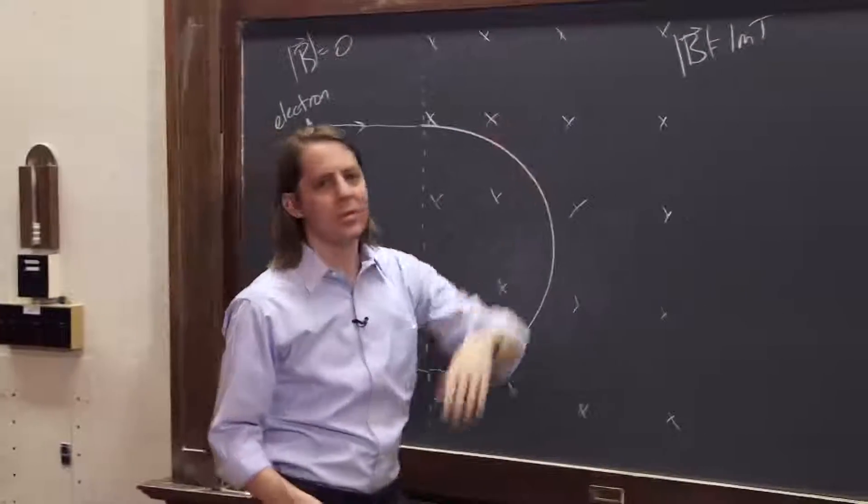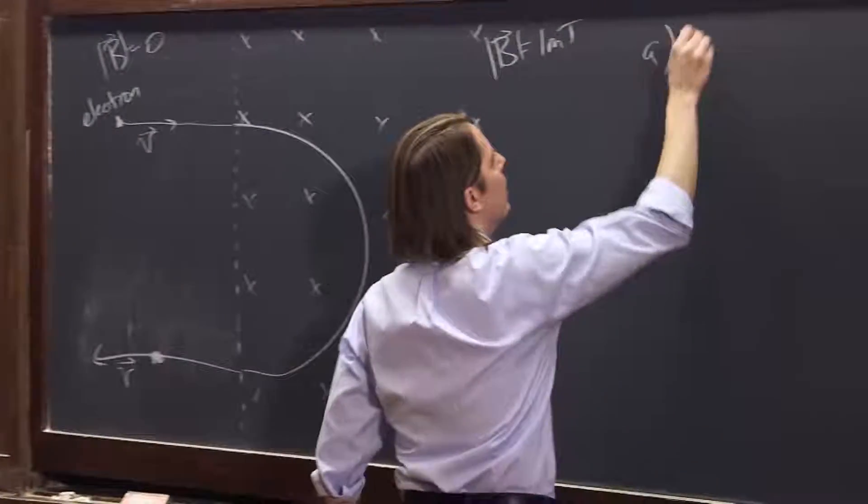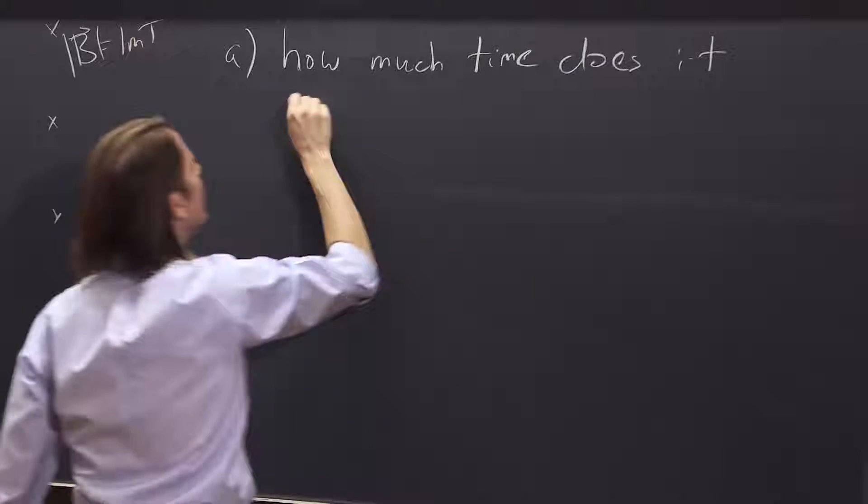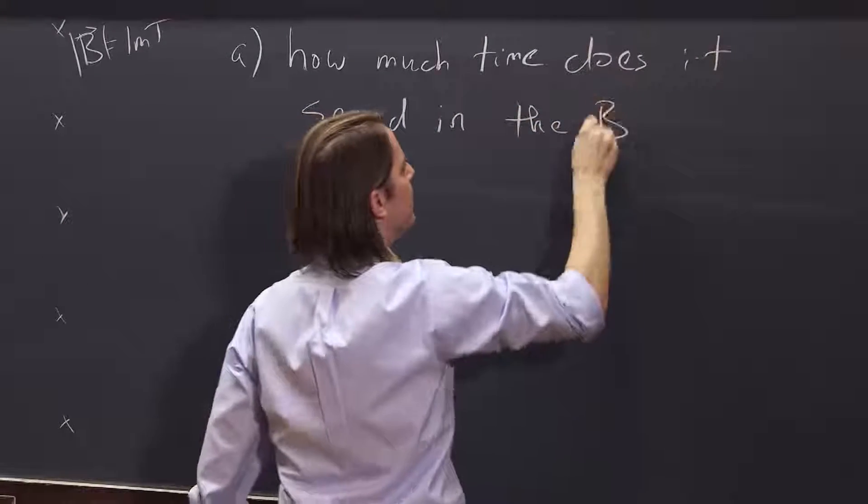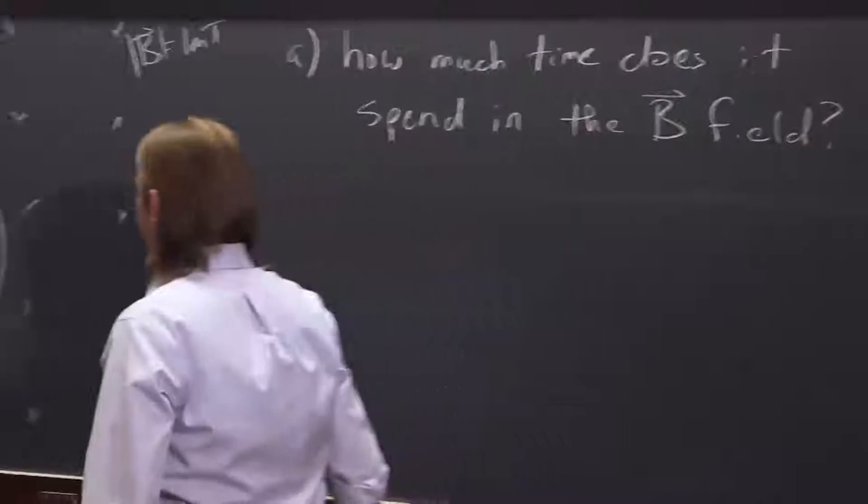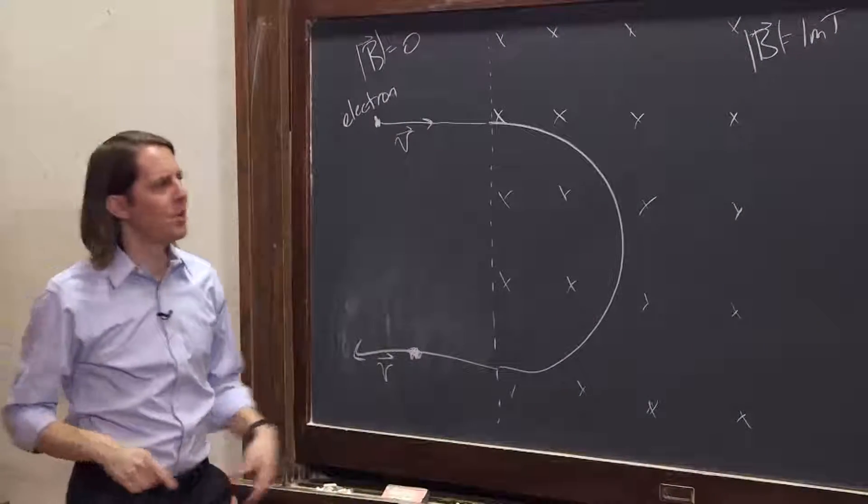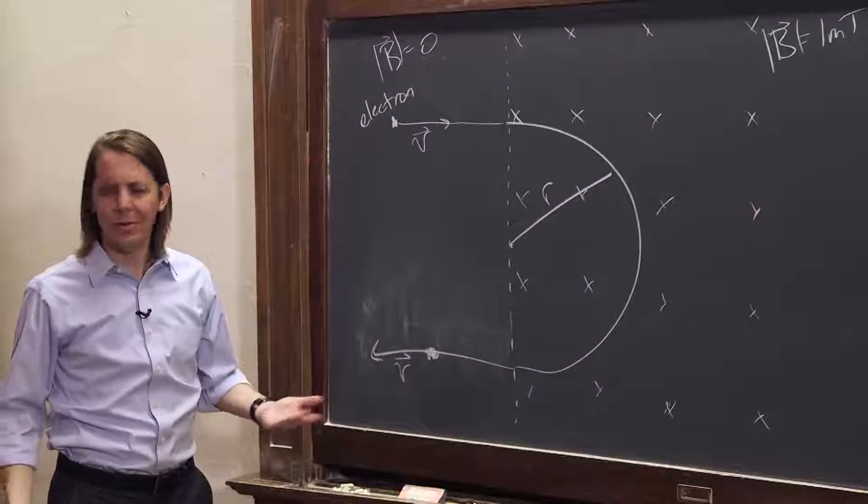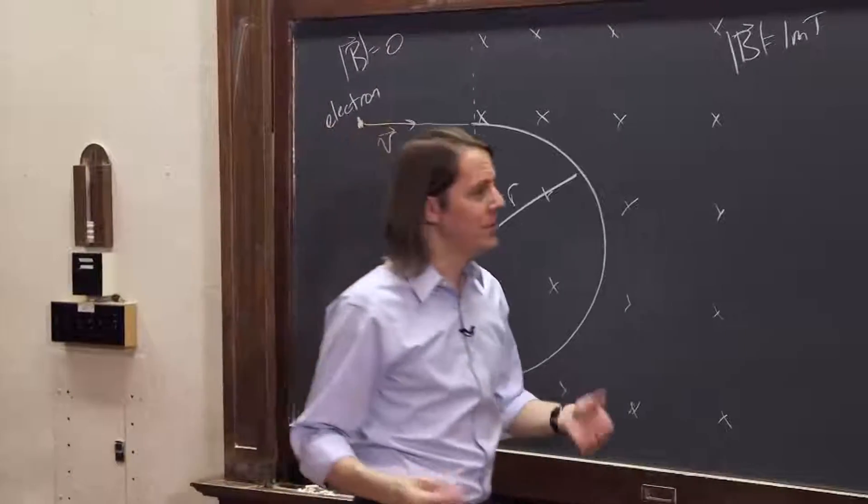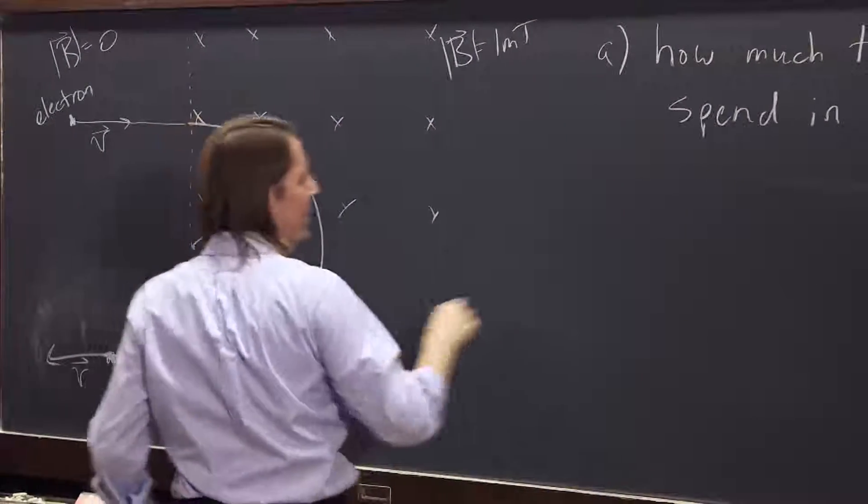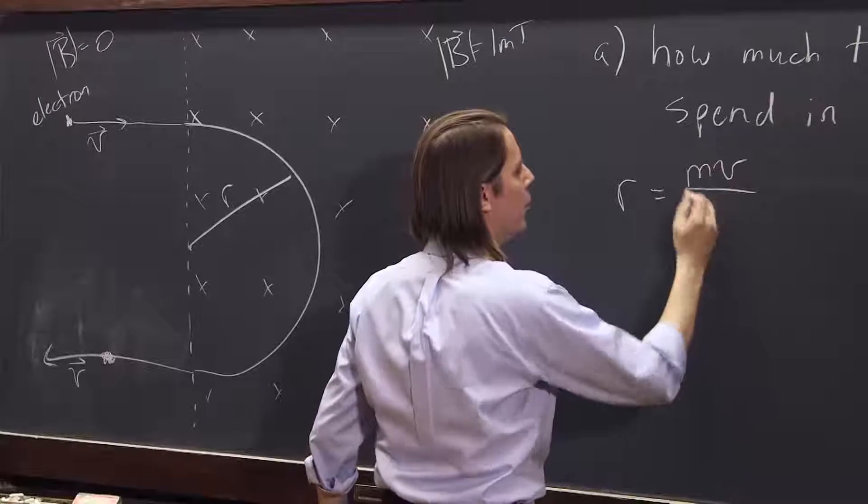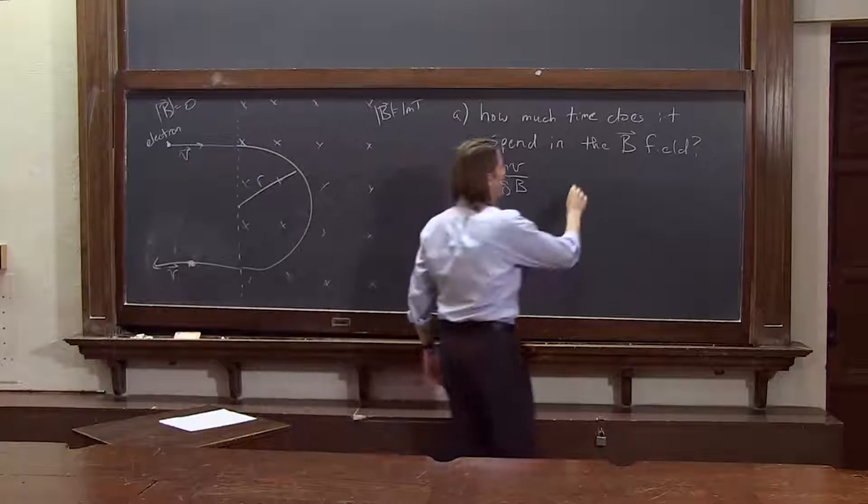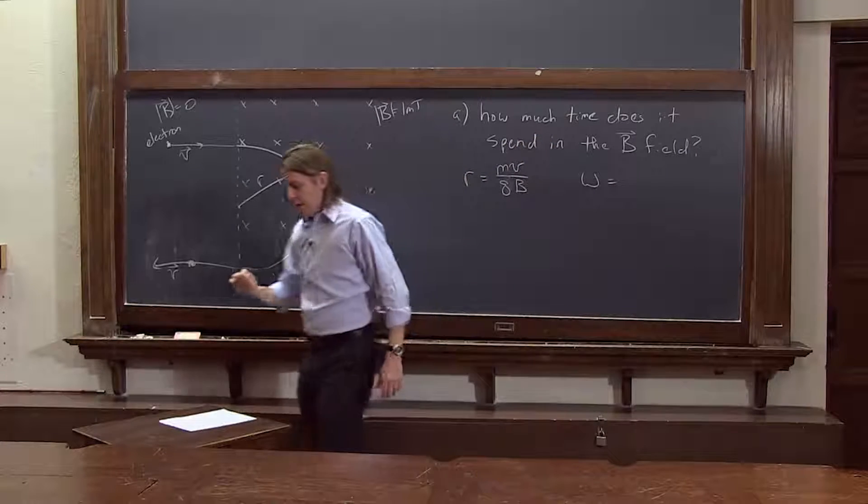So that's what we're given. Electron, velocity v, goes into 1 millitesla. The first question is, A, how much time does it spend in the B field region, or just the B field? Basically, how long does this take? It looks like a tricky problem because we were given 1 millitesla but we weren't given the velocity. We don't know how fast it's going, and we don't even know the radius. And the radius would tell us how far it went. So how do you do kinematics? Well, when you know what to do, you just start writing down the equations that you know. So the radius, we know, if we're in circular motion, we know that radius is mv over qB. Okay, well we don't know v, so that doesn't get us very far.